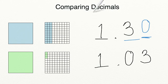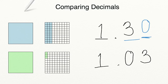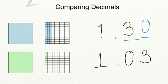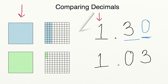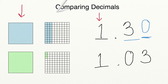So now we're ready to go ahead and compare these decimals. Your first step when comparing decimals is to compare your furthest place value to the left — that's going to be your largest value. So we're going to be comparing our ones place to start. As you can see, both decimals have a value of one whole in the ones place, so that means we need to move over to the next place value. We're going to move to the tenths place.